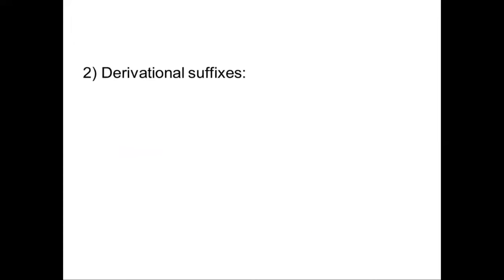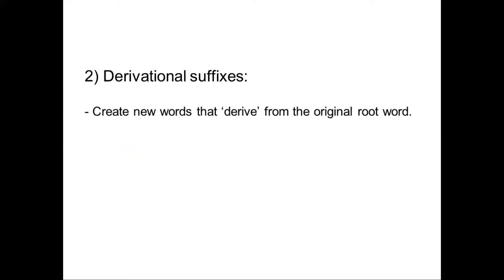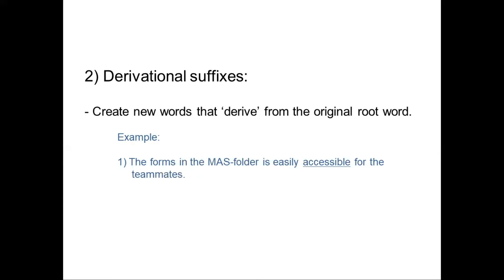Next, derivational suffixes: when a suffix is added at the end of a base word, it creates a new word — it derives a new word from the original root word. For example, take 'careful' — 'care' is the base word and 'ful' is added at the end, creating the new word 'careful.' This is a derivational suffix.